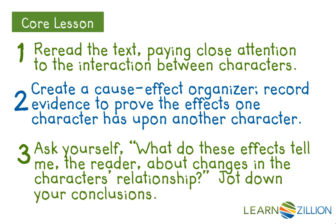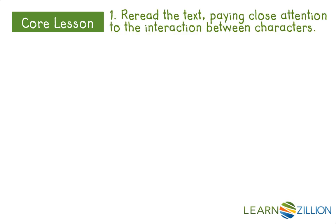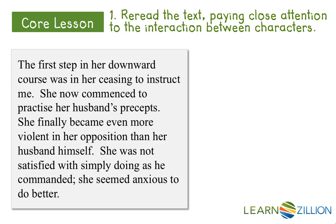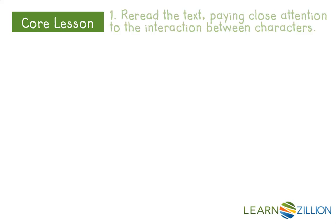Let's begin with step one — we're going to reread the text paying close attention to the interaction between characters. Mistress Hugh has changed. This part at the very beginning describes the first step in her downward course. We find that it says her first step was ceasing to instruct Frederick. She had been his teacher, but now she has stopped.